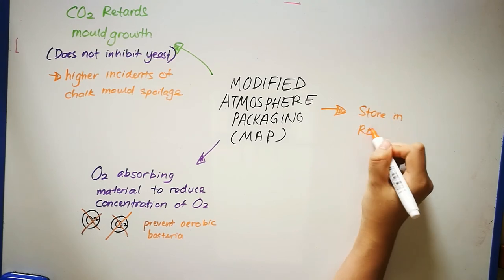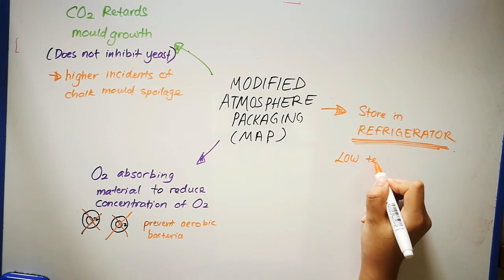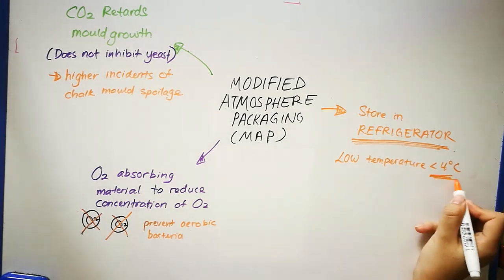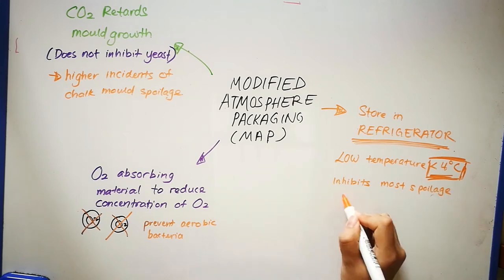Lastly, storing the bakery products in the refrigerator creates a low temperature surrounding, which is below 4 degrees Celsius, to inhibit the growth of mold spoilage microbes.